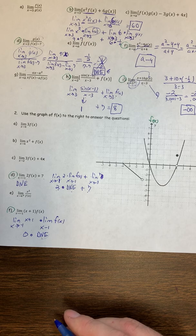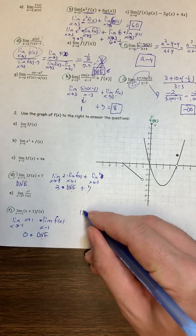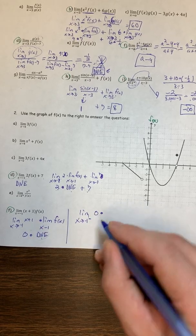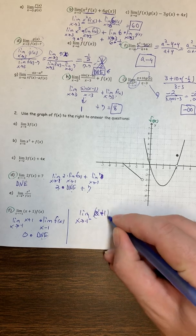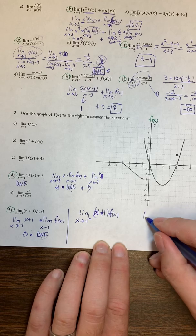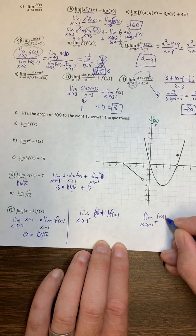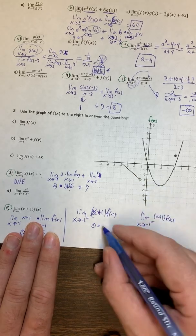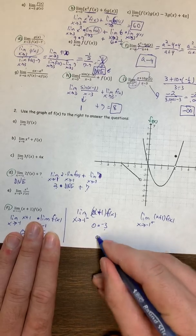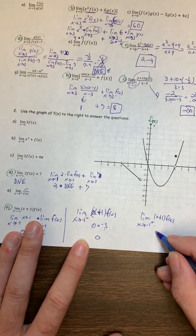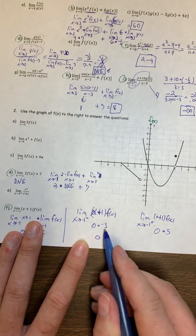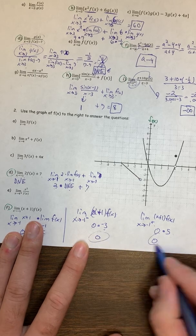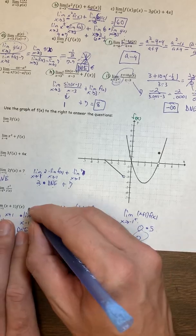We're going to be more careful here and use the definition of a limit, trying from both the left and the right. When we run into trouble, we can always go back to asking what's the limit from the left and from the right. From the left, as x goes to negative 1, we get 0 times negative 3, which is 0. From the right, we still get 0, and f(x) goes to 5, so 0 times 5 is also 0. The limit from the left is 0, the limit from the right is 0, so the overall limit goes to 0.